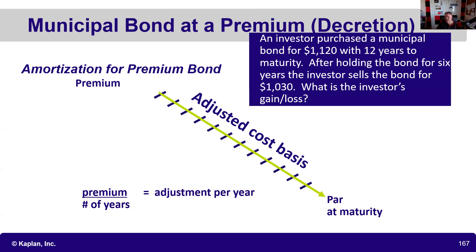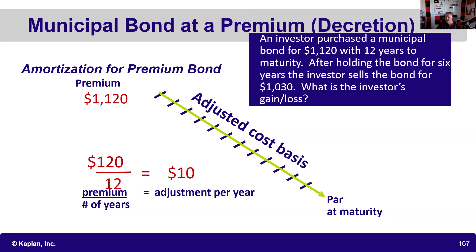After holding the bond for six years, the investor sells it for $1,030. What is the investor's gain or loss? There are three steps: recognize this is a muni bond purchased at a premium, figure out how much to decrete each year, and adjust the cost basis. We're losing $120 over 12 years, so the adjustment each year is $10.